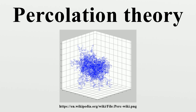Introduction. A representative question is as follows. Assume that some liquid is poured on top of some porous material. Will the liquid be able to make its way from hole to hole and reach the bottom? This physical question is modeled mathematically as a three-dimensional network of n times n times n vertices, usually called sites, in which the edges or bonds between each two neighbors may be open with probability P, or closed with probability 1-P, and they are assumed to be independent. Therefore, for a given P, what is the probability that an open path exists from the top to the bottom? The behavior for large n is of primary interest.